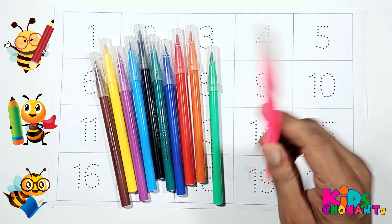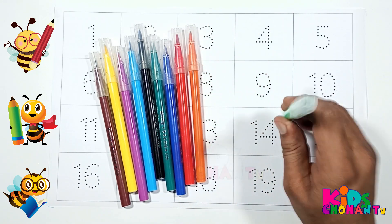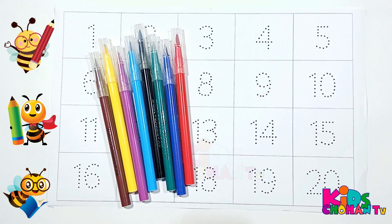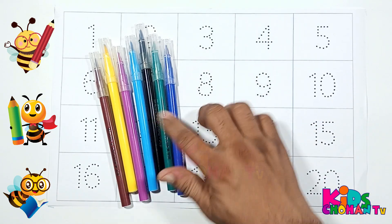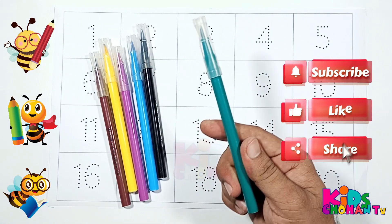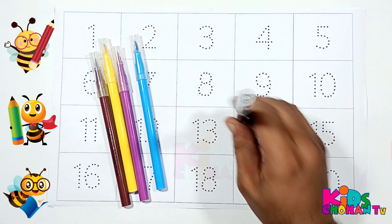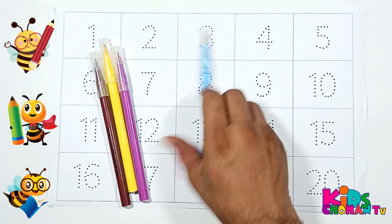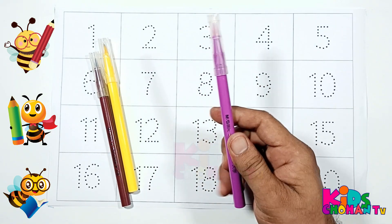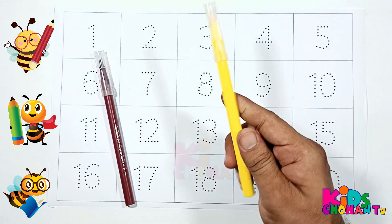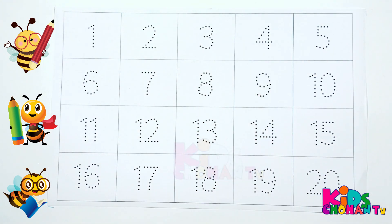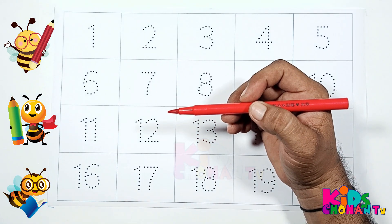Pink, light green, orange, red, blue, green, black, sky blue, purple, yellow, and brown color. Kids, we will trace with these colors.